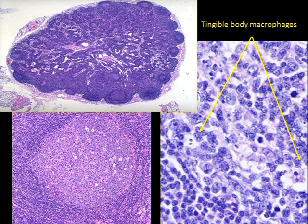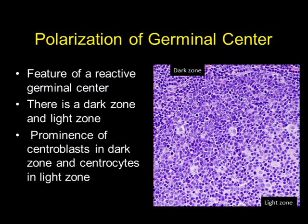The germinal center is surrounded by the mantle zone. At higher power we see the tangible-body macrophages. Another way to tell a germinal center is reactive is polarization — there's a dark zone in the upper left and a lighter zone in the lower right, because antigen is passing through different areas of the germinal center. That polarization is a feature of a reactive germinal center.